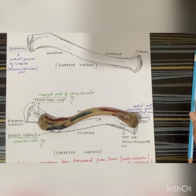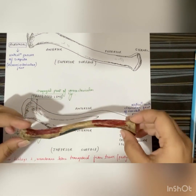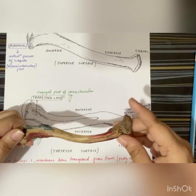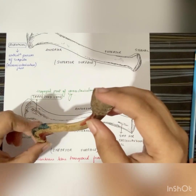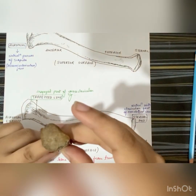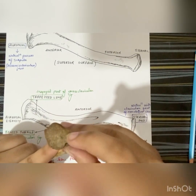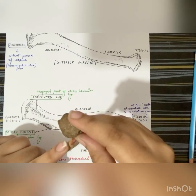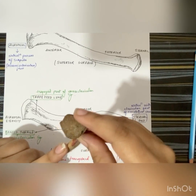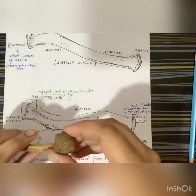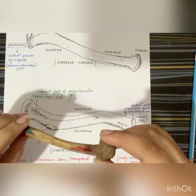So let's start today with the anatomy of the clavicle. The clavicle has two ends: a lateral end or acromial end, and a medial end or sternal end. The medial or sternal end is large and rounded, quadrangular in shape, and has a facet for articulation with the manubrium. The lower part of the facet extends slightly to the inferior surface and articulates with the first costal cartilage.